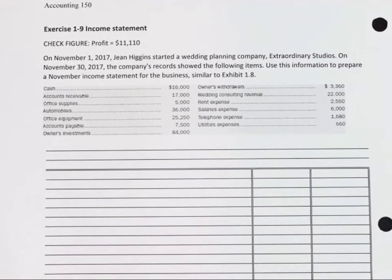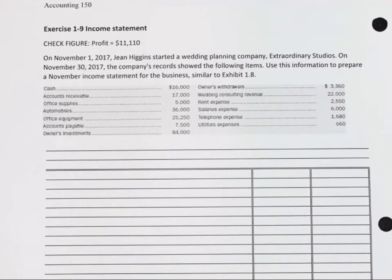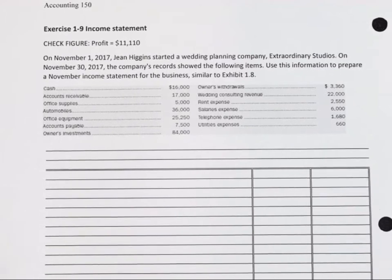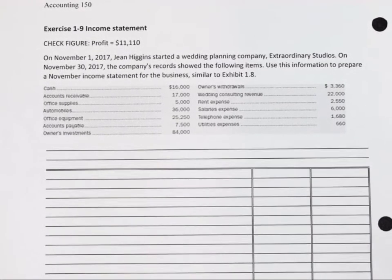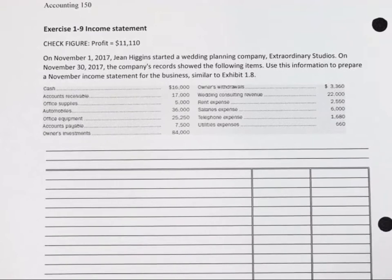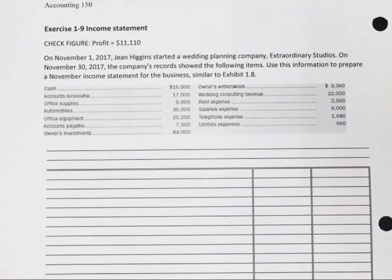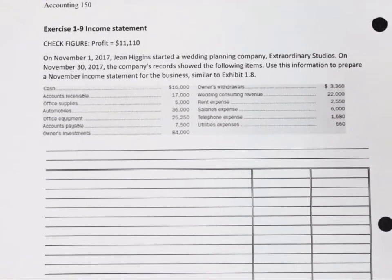On November 1st, 2017, Gene Higgins started a wedding planning company, Extraordinary Studios. On November 30th, the company's records showed the following items. Use the information to prepare a November income statement for the business, similar to Exhibit 1.8.